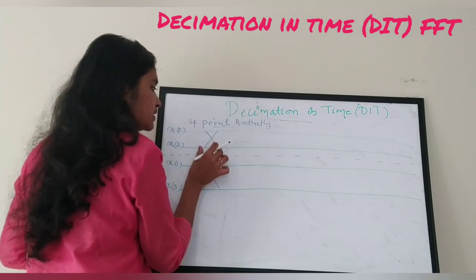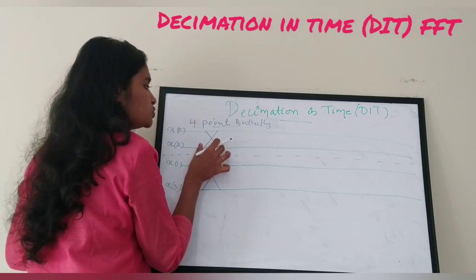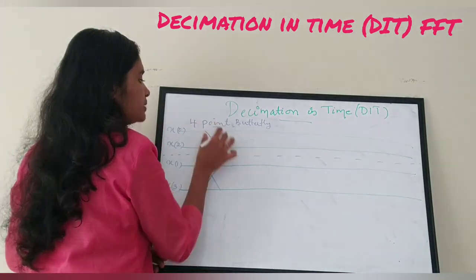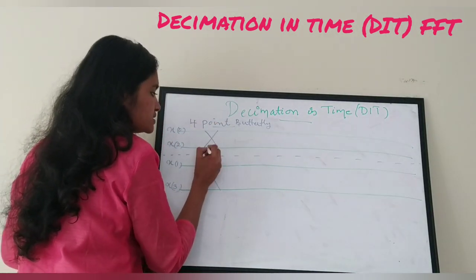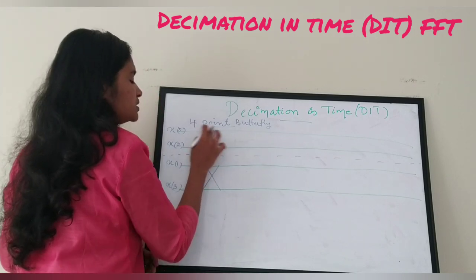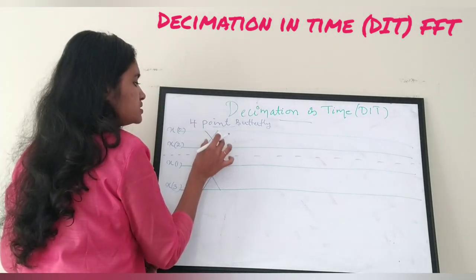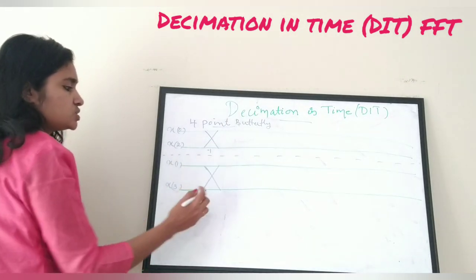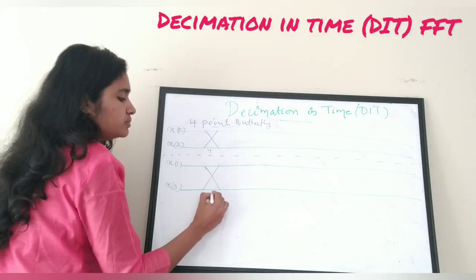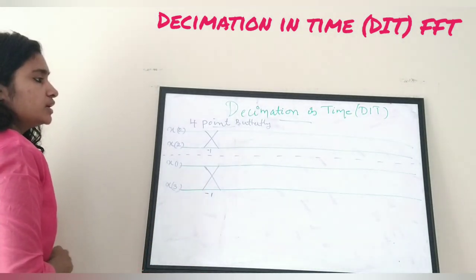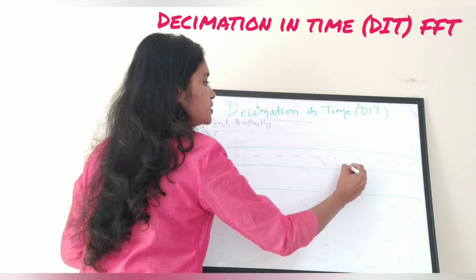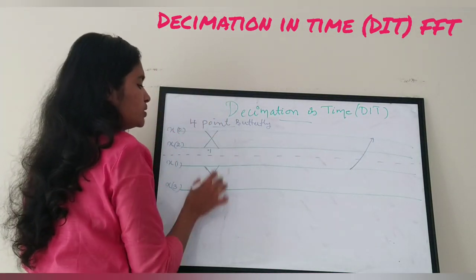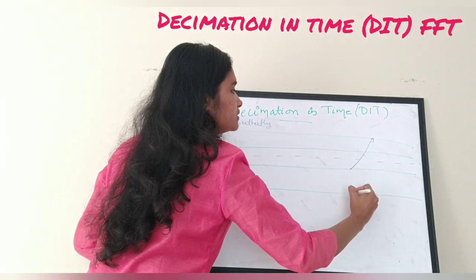Each butterfly in stage one is a basic two-point butterfly. The lower branch of each has a negative weight — I'm marking the negative sign for the bottom branch of each. For the second stage, we are going to combine these two two-point butterflies together.